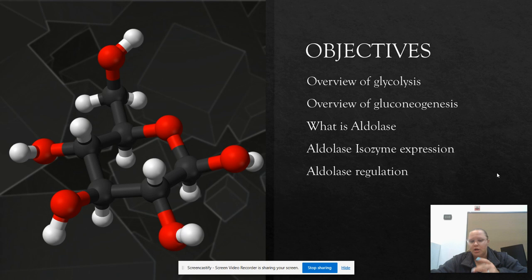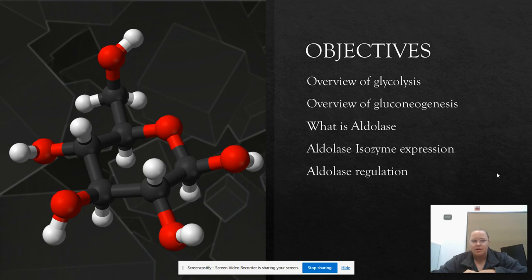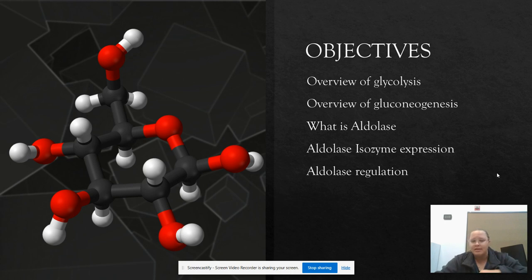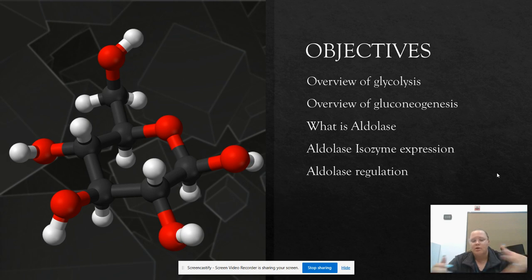What we're going to learn here: what is glycolysis, what are the products, what are the reactions, what is gluconeogenesis, and what is the whole point of it. We're going to specifically look at the enzyme aldolase, the isozymes of that enzyme and where they're expressed, and then we're going to look at the regulation of aldolase in our body.